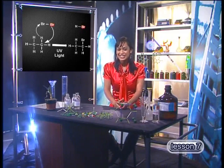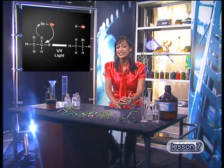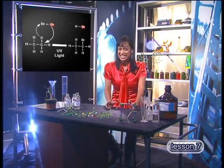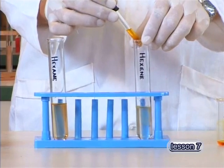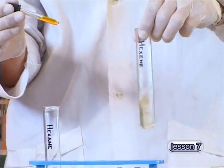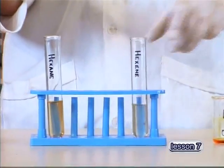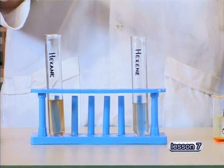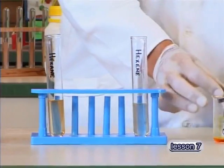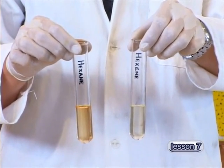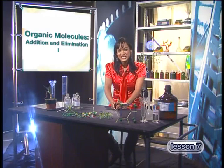Now that we've seen that saturated hydrocarbons react using substitution, let's see what happens when we react a halogen with an alkene. Remember, we used bromine to tell a saturated from an unsaturated compound. We saw that bromine reacts very quickly with the unsaturated compound, leaving a colorless product. The speed at which the bromine reacts is a sign that bromine is not reacting in a substitution reaction, but in some other way. This brings us to the second type of reaction: addition.